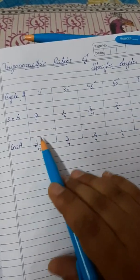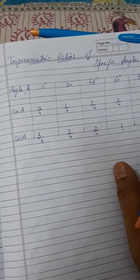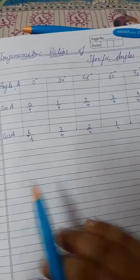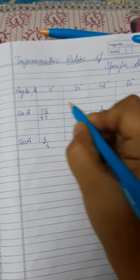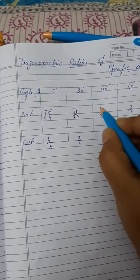First we write 0, 1, 2, 3, 4. After that divide it, all with 4. Next step is to take the square root of all of these.